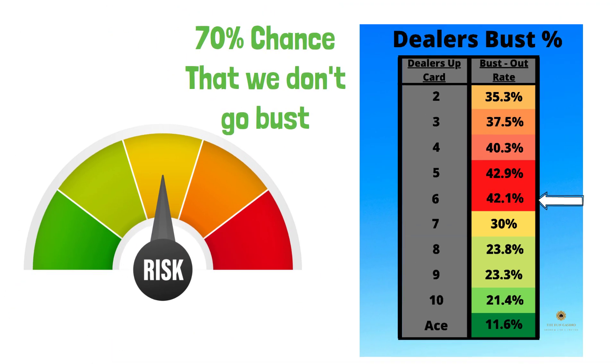The same strategy can be used when the dealer has a 4 or a 5. With the probability they'll go bust over 40% of the time, we should not put ourselves at unnecessary risk of going bust.